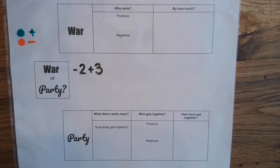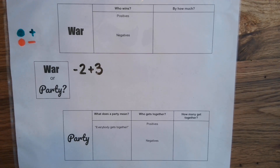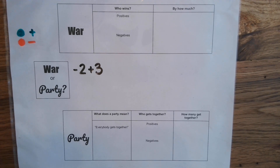We've learned a couple of different ways and you just need to stick with whichever method really works for you and makes your brain happy. We had the number line, we have the rules — just memorizing rules — we have those jingles: same signs you're going to add, different signs you're going to subtract. Same sign, keep the sign; different, keep the larger.